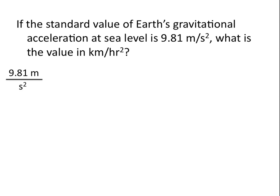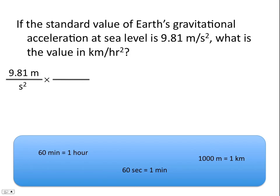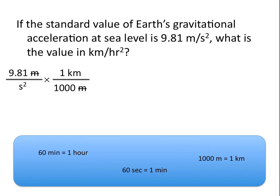Let's start by writing the information that we're given: 9.81 meters on the top, per second squared on the bottom. We'll need a conversion factor to convert from meters to kilometers. We know that 1,000 meters is equal to 1 kilometer. Because we have meters on the top in our problem and we want meters to cancel, we'll put the value with units of meters on the bottom of our conversion factor, meaning 1 kilometer goes on the top. This cancels the units of meters, so if we stopped here we'd have kilometers per second squared.